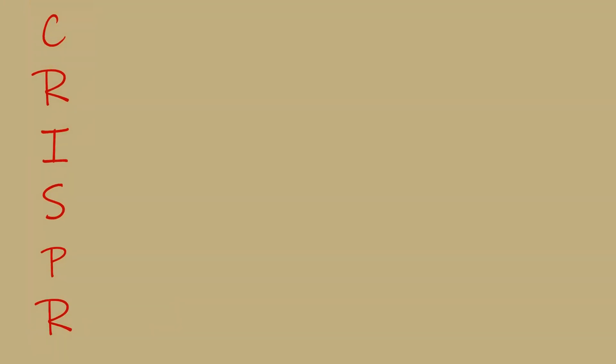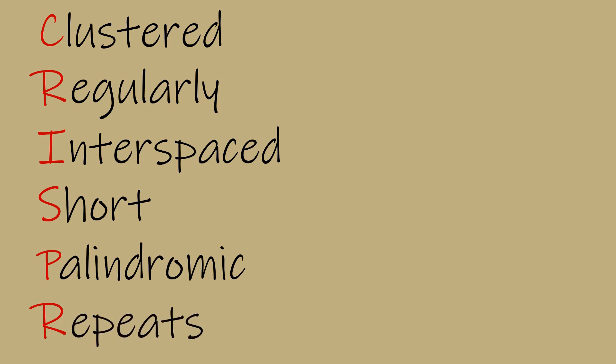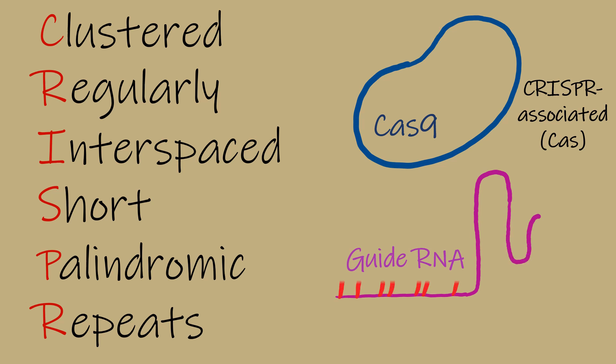CRISPR is the short for clustered regularly interspaced short palindromic repeats. These are DNA sequences derived from viruses and there are two main components of the CRISPR-Cas9 system: the Cas9 protein and the guide RNA.